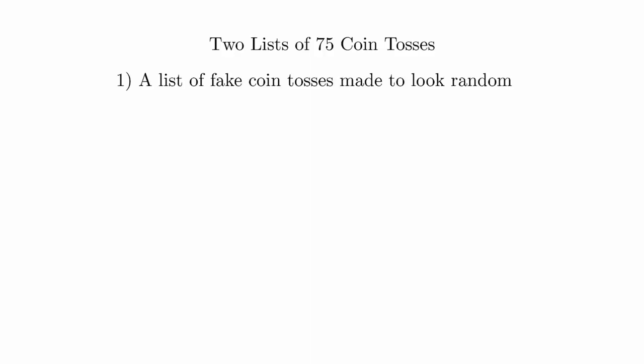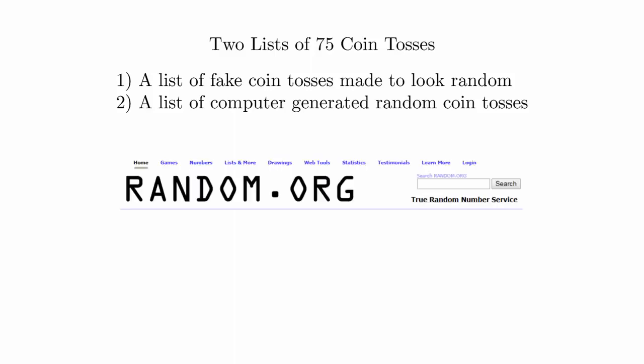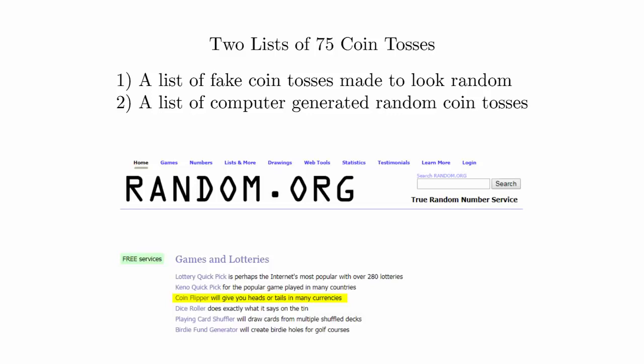For one list, you're going to make it up on your own, but trying to do it in a way that looks random. For the other, you're going to use a random list of coin flips generated by a computer. This can be done by going to random.org and using their virtual coin flipper. In class, we're going to see whether we can tell the difference between the faked random list and the truly random list.